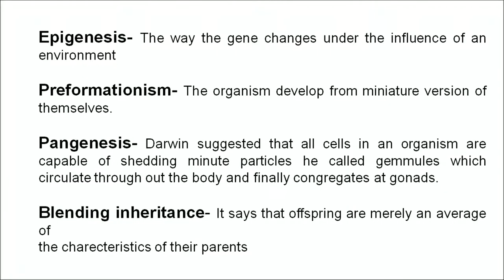Epigenesis describes how genes change under the influence of environment. For example, identical twins have the same genetic makeup but we can find some differences in them. Preformationism says that organisms developed from a miniature version of themselves. According to pangenesis, Darwin suggested that all cells shed minute particles called gemmules which circulate throughout the body and congregate at the gonads. Blending inheritance says that offspring are merely an average of their parents' characteristics.